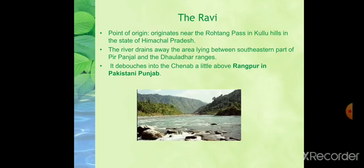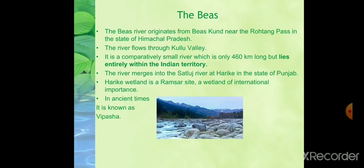Next is the Ravi river. The Ravi originates near the Rohtang Pass in the Kullu hills in the state of Himachal Pradesh. It flows through the Chamba valley, then after crossing Chamba takes a south-westerly turn and cuts a deep gorge in the Dhauladhar range. It enters the Punjab plains near Madhopur and later enters Pakistan below Amritsar. The river drains the south-eastern part between the Pirpanjal and Dhauladhar ranges, and debouches into the Chenab a little above Rangpur in Pakistani Punjab.